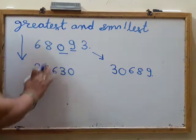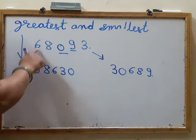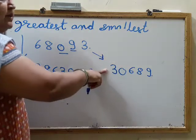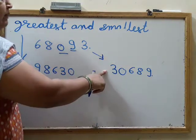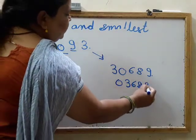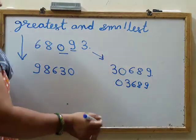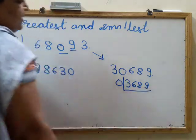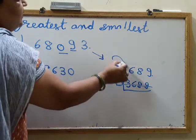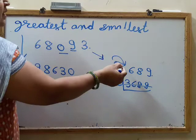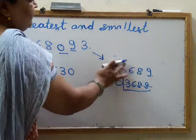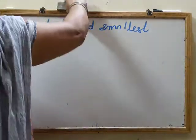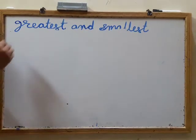Whenever there is a zero in the digits, forming the greatest number is the same — write largest to smallest. But when making the smallest number, we cannot put zero first because then our number loses a digit. Zero will go inside and the second smallest number goes outside first. In this way, we exchange their places and do it correctly.